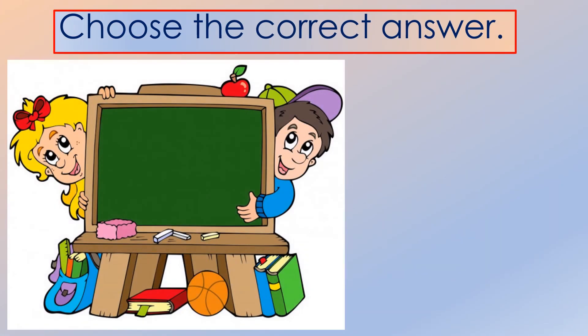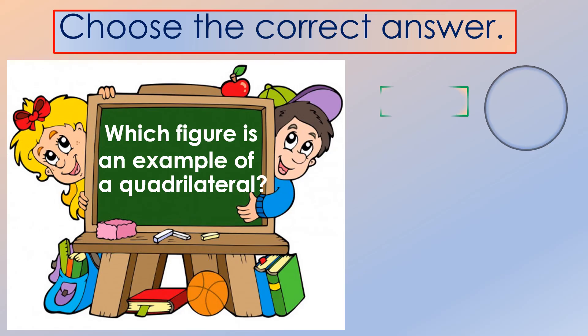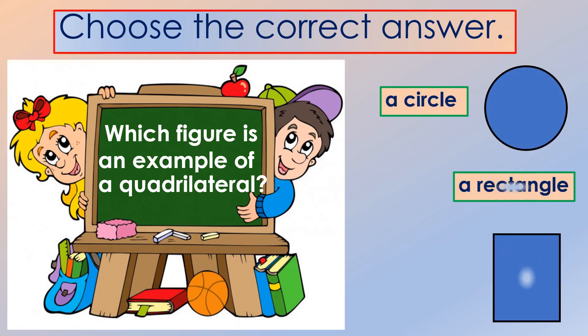Down to our last question. Which figure is an example of a quadrilateral? Is it a circle? A rectangle? Or a triangle? For the correct answer, rectangle.